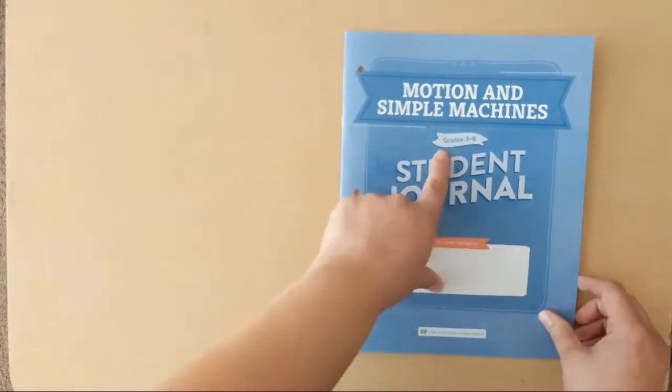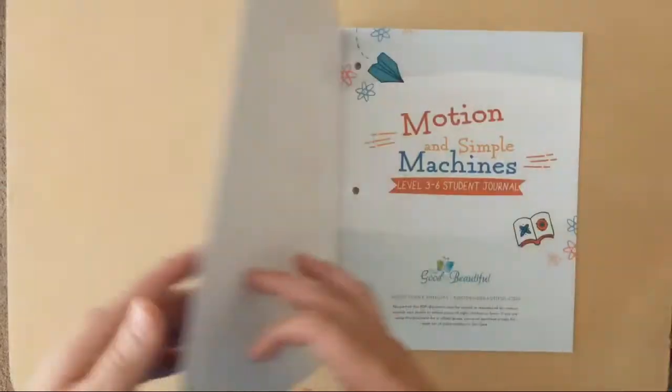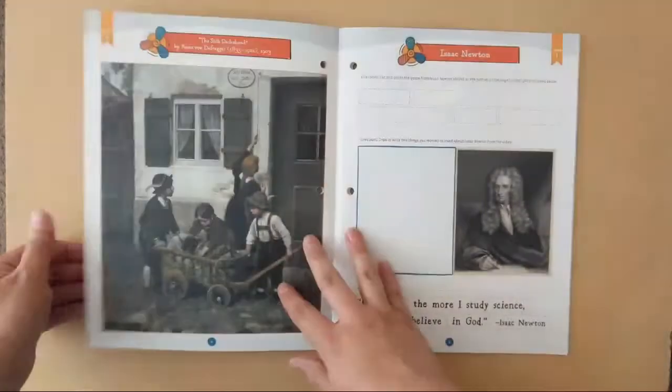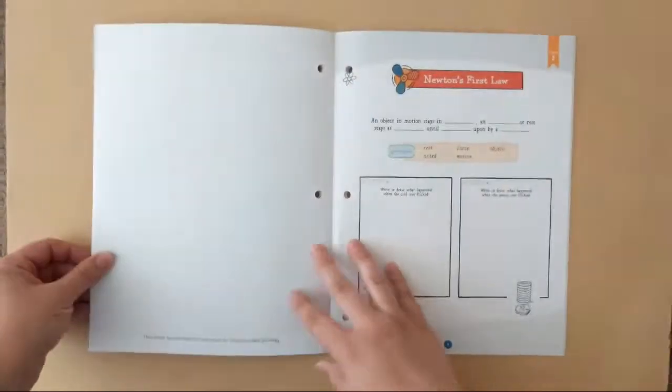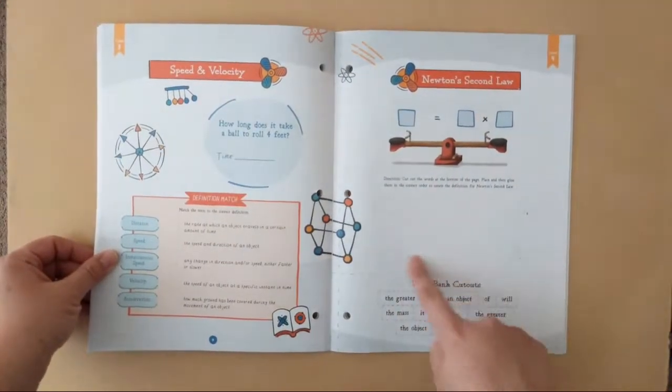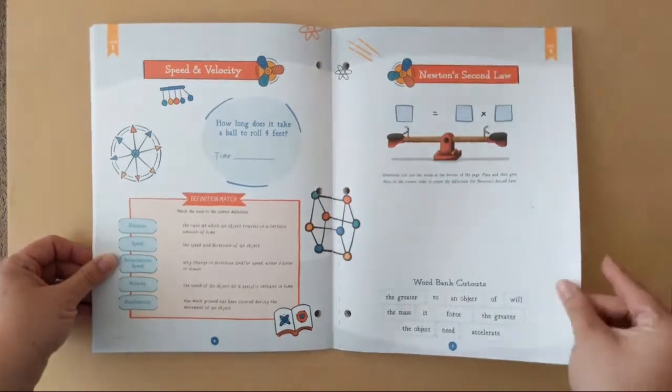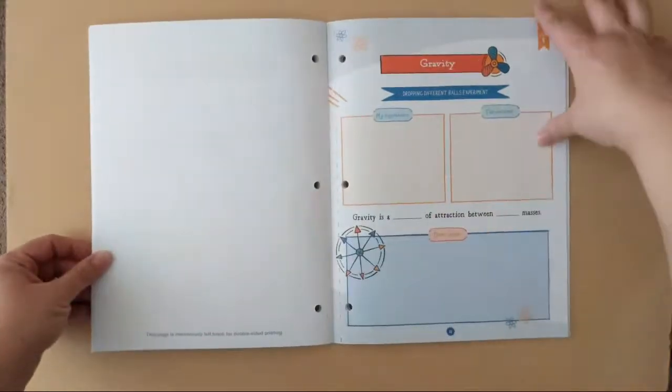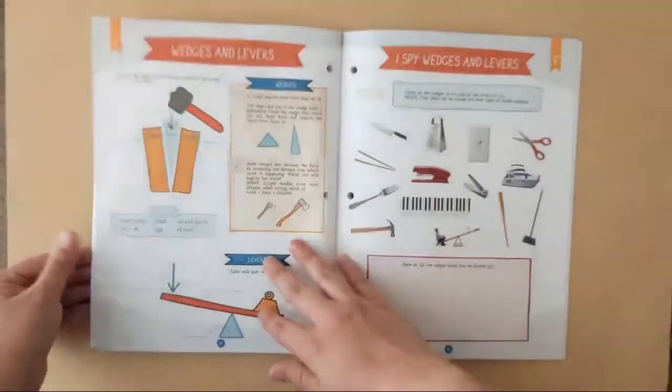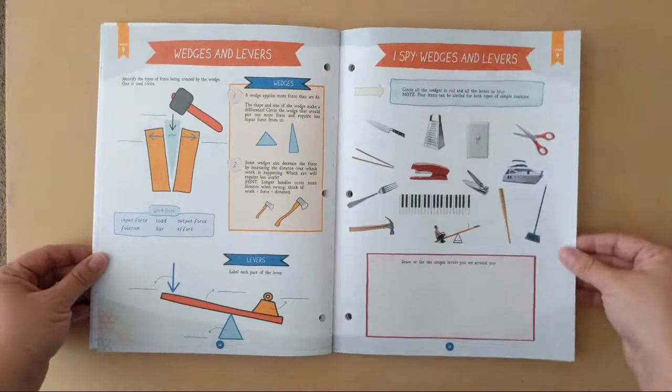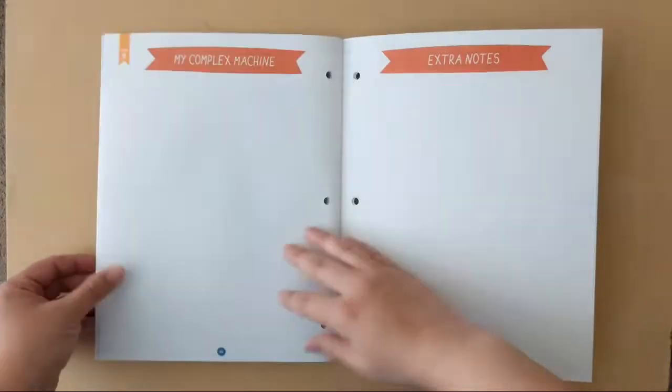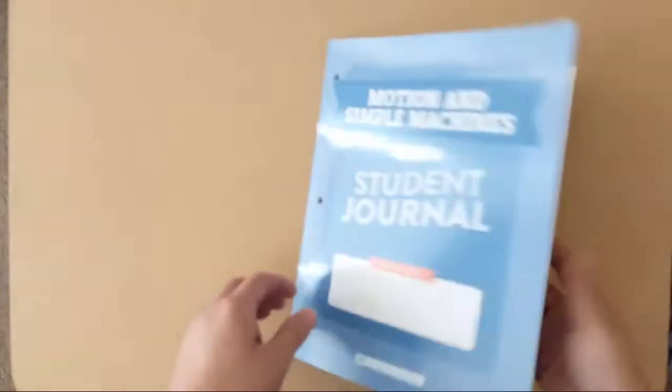All right, let's check out grades three through six student journal. You'll notice here that they'll cut these out and then tape, glue, whatever, put them in. Nice and easy.